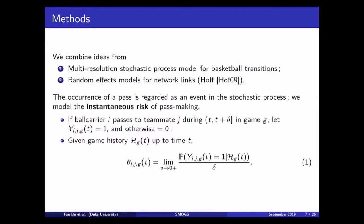So, following the stochastic process framework, we look at the dynamics of a basketball game as a stochastic process. And then a pass made by a player to another player is just a jump event in this stochastic process. And we are interested in modeling the risk function of this event.